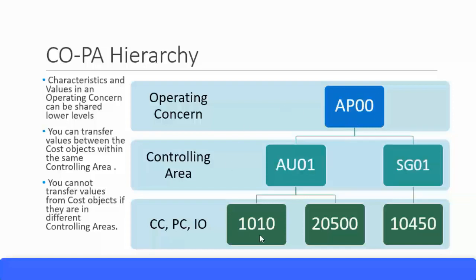You can transfer costs between cost centers within the same controlling area. You can also transfer costs from an internal order to another internal order, or from a profit center to another profit center — all within the same controlling area. However, you cannot transfer costs from a cost center in one controlling area to a cost center in a different controlling area.